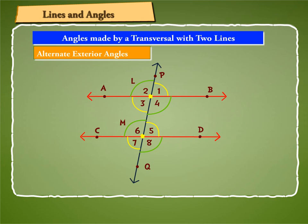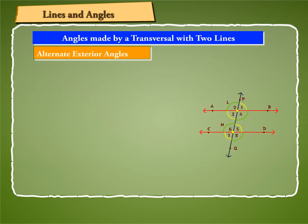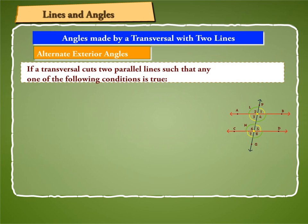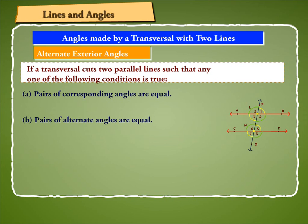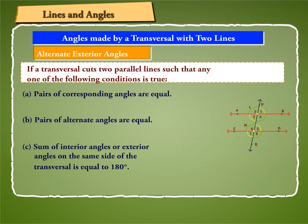Let us state some results when a transversal cuts two parallel lines. If a transversal cuts two parallel lines, then pairs of corresponding angles are equal, pairs of alternate angles are equal, and the sum of interior angles or exterior angles on the same side of the transversal is equal to 180 degrees. But these results hold good only if the lines are parallel.